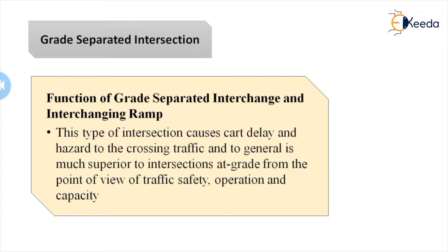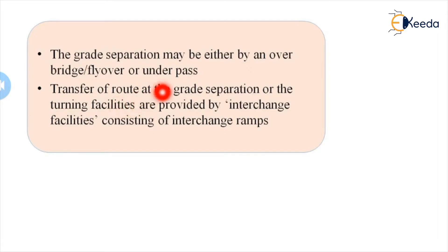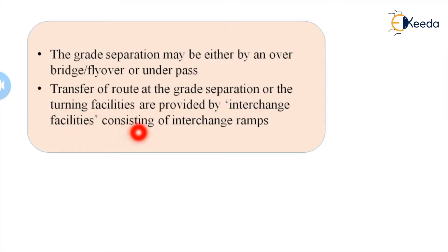This type of intersection is very safe in traffic — much less accidents will occur as compared to at-grade intersection. The grade separation may be either by an overpass or an underpass, meaning the project road will go over or under the crossing road. Transfer of route at the grade separation or the turning facility are provided by interchanging facilities consisting of interchanging ramps.